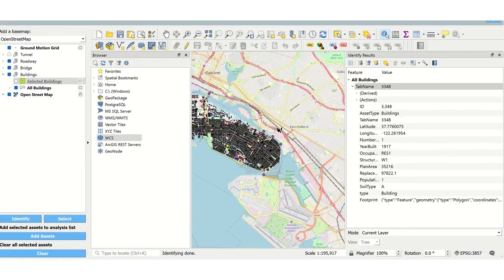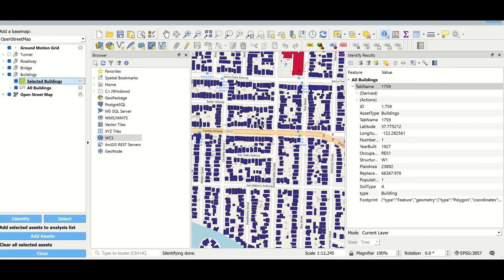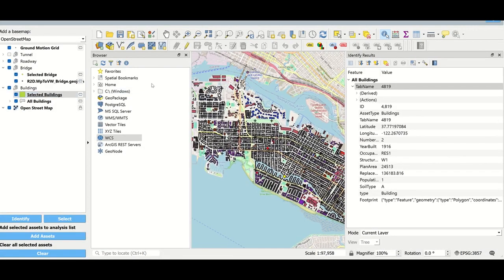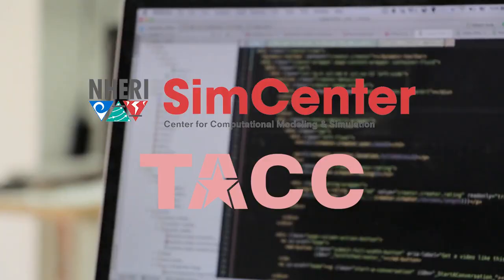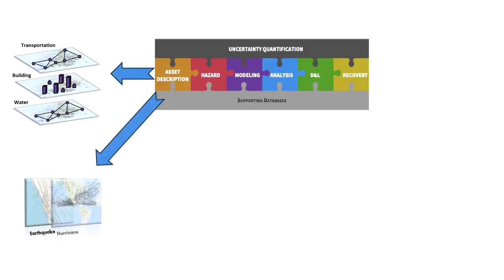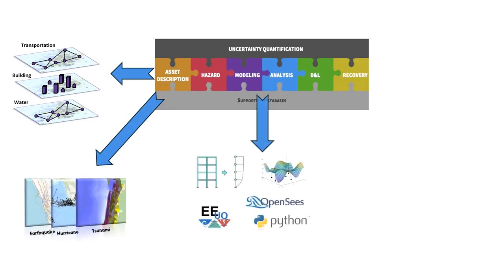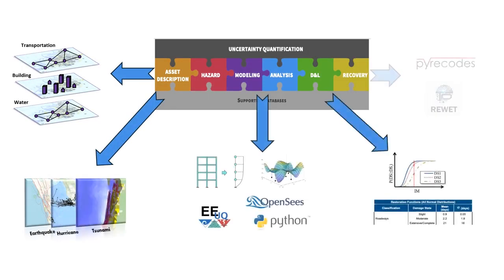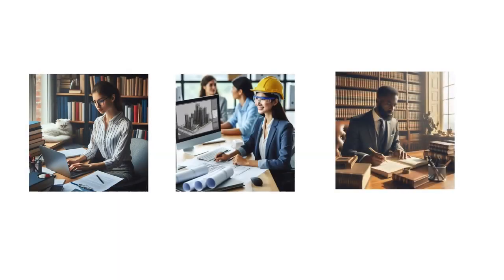R2D provides a GIS user interface for easy visualization of inputs and results, easy linkage to cloud computing, and high flexibility with its flexible workflow, with a broad selection of models including inventory and hazard event generation tools. These make R2D suitable for practitioners, researchers, and policymakers.